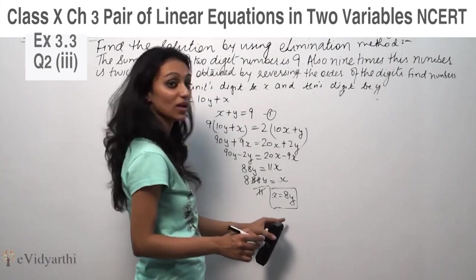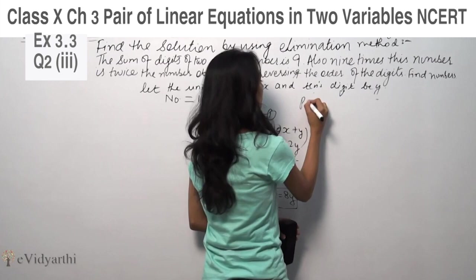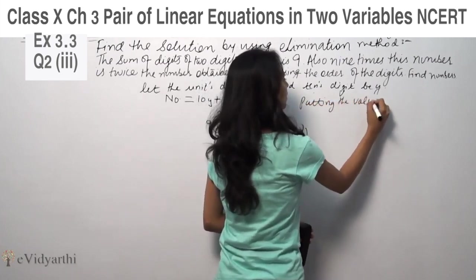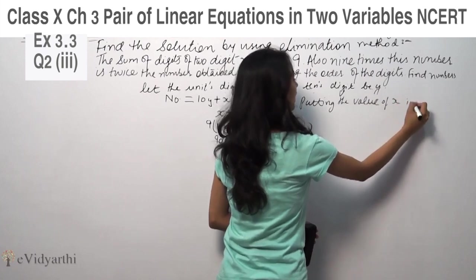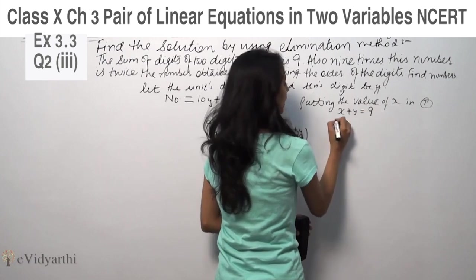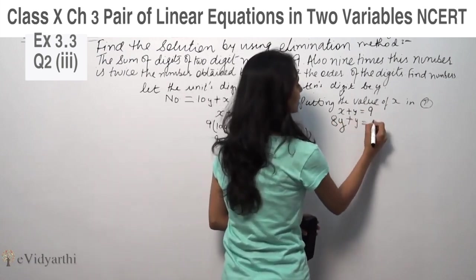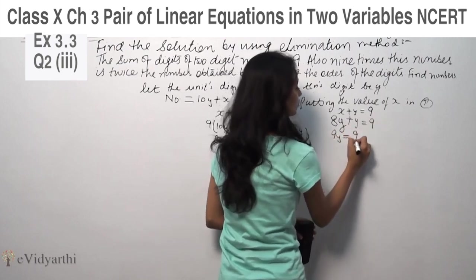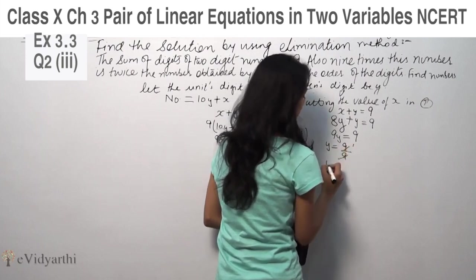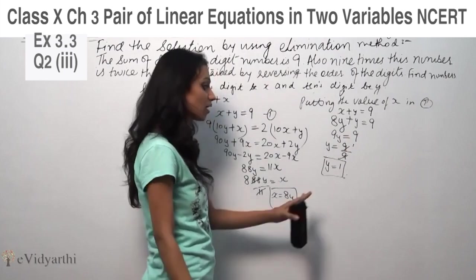Now x value is 8y. This 8y is going to be substituted in the first equation. So we are going to substitute the value of x in the first. So x plus y is equal to 9. So 8y plus y is 9y equals 9. So y equals 9 upon 9, which is 1. So y value is 1.